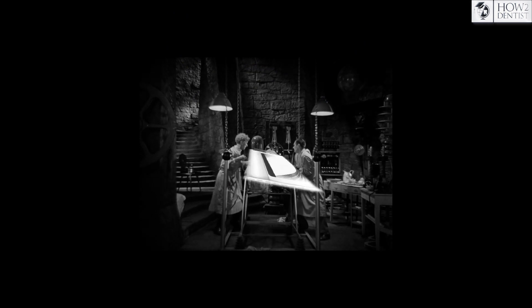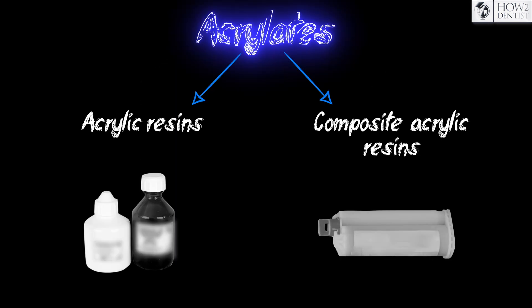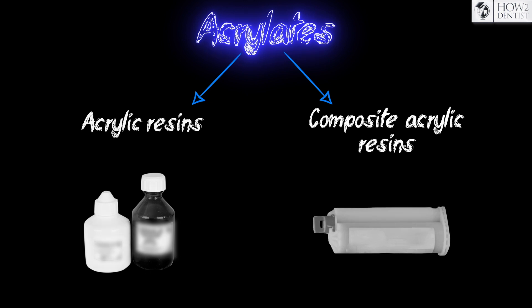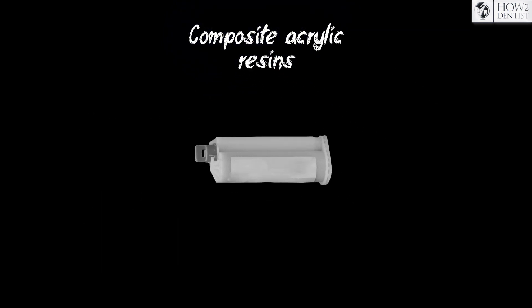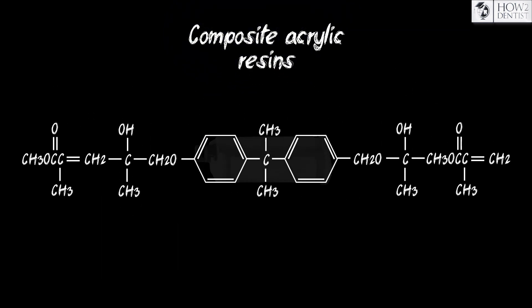In the previous video we discussed why composites replaced acrylic plastic. Composite plastics also belong to acrylics, because even modern materials contain acrylic acid monomers.